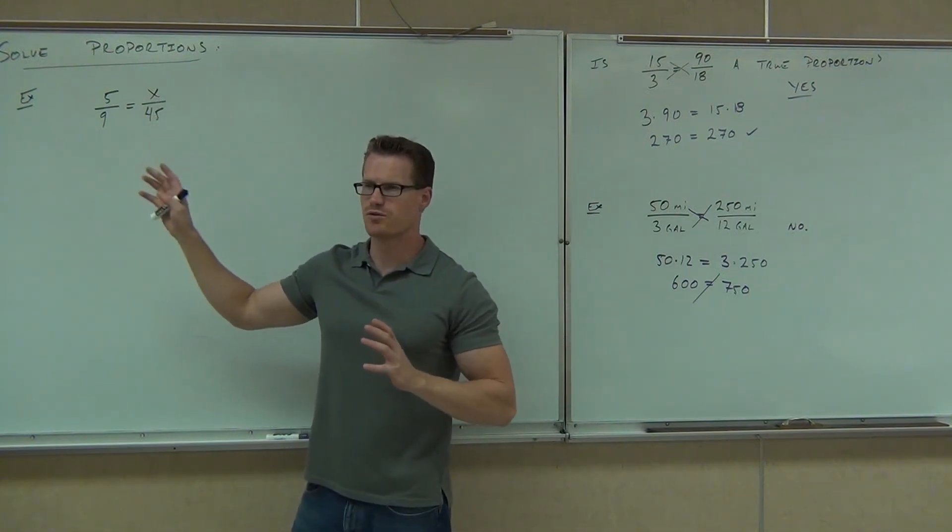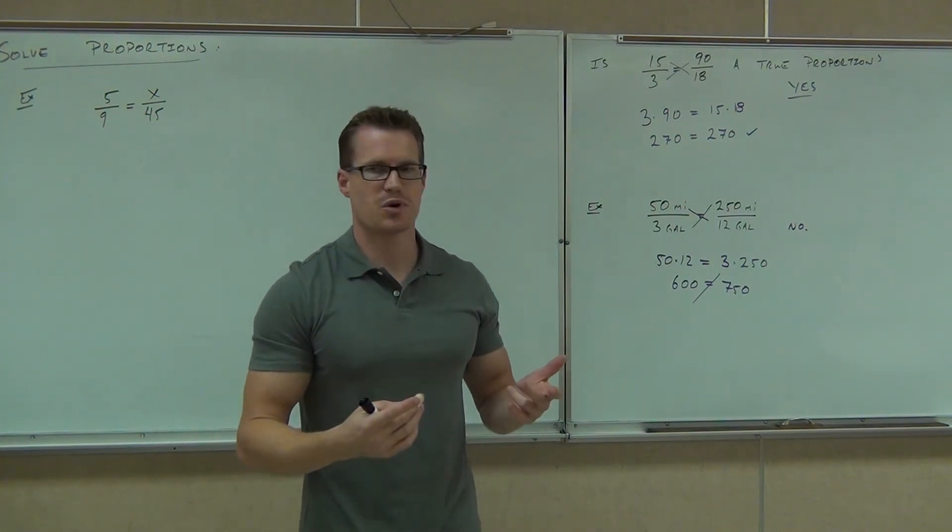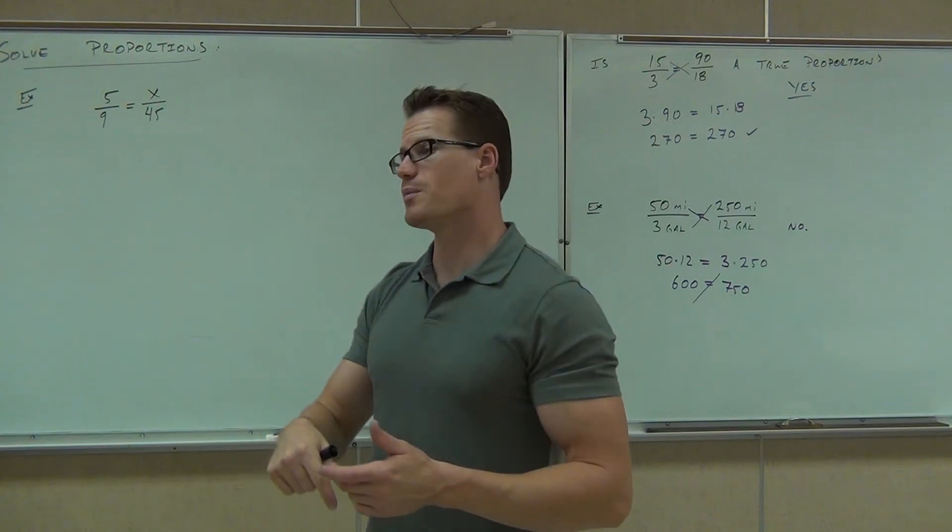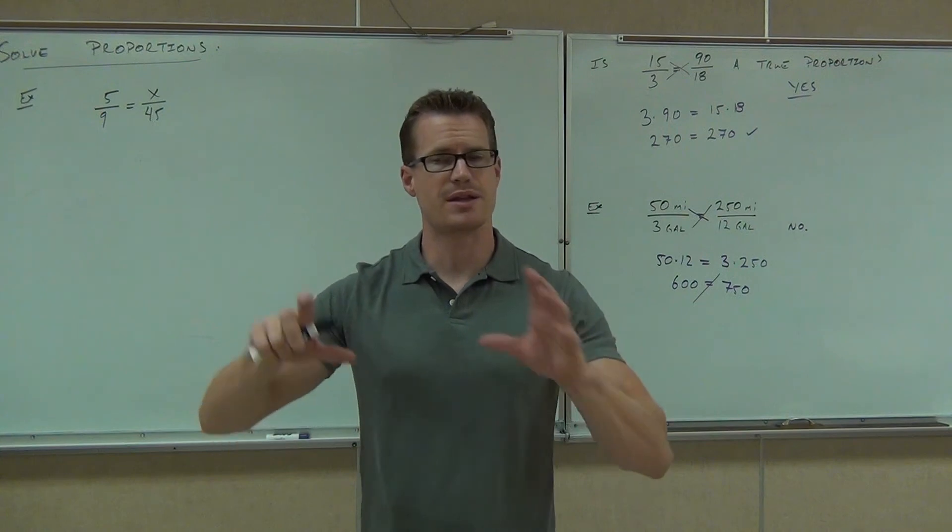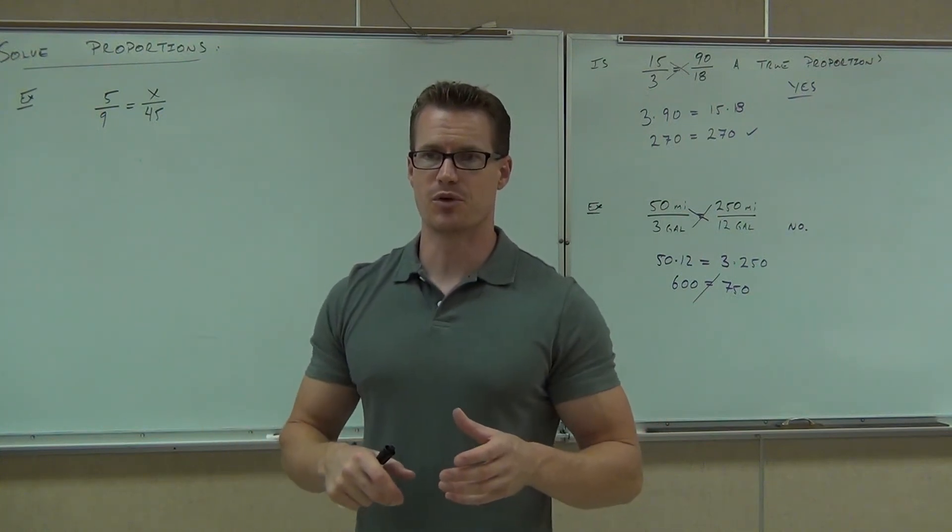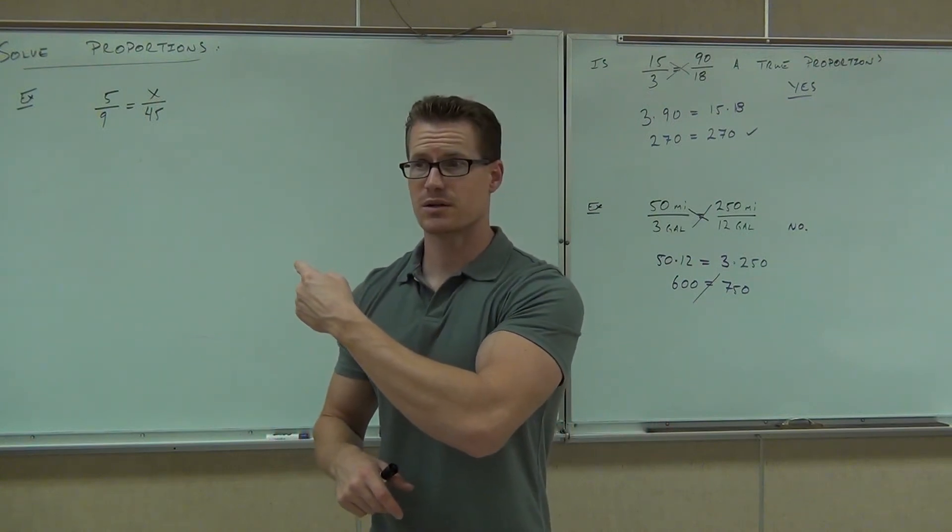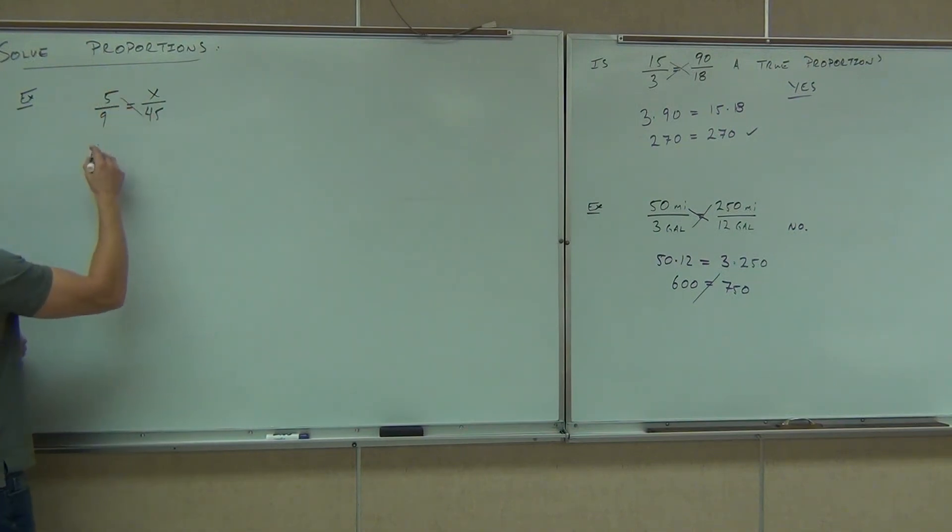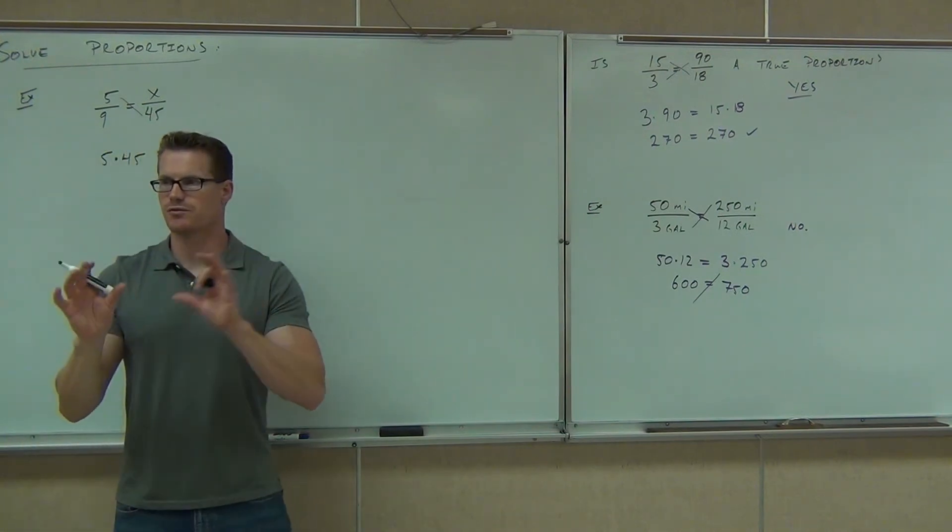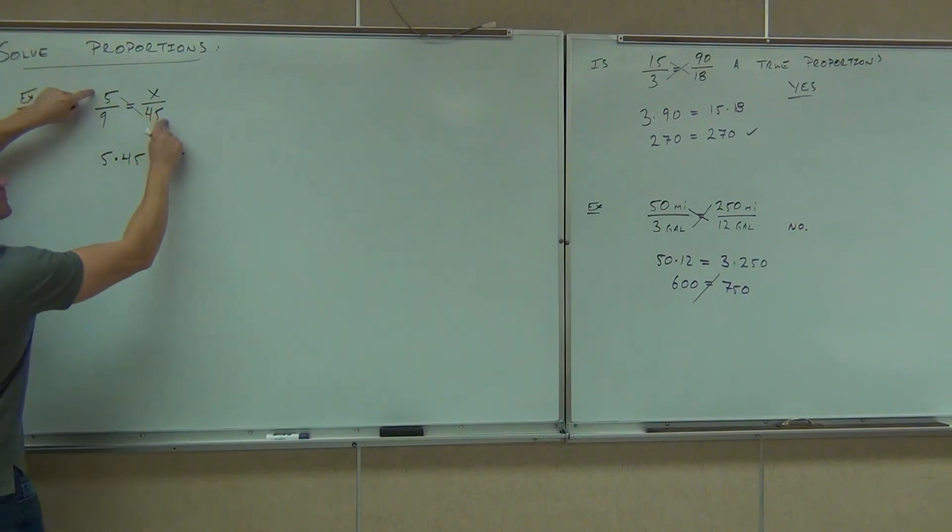we can't tell whether this is true or false because we don't even have a number up there right now, but what we can do is use this idea of cross products to solve for what that number needs to be in order to make it a true proportion. That's the idea. You're solving for what that number needs to be in order to make it a true proportion. You guys know the whole cross multiplication thing? Cross product? Can we find the cross product here? What two numbers need to be multiplied together? Five times 45. Okay, so we do five times 45. It does not matter what side that goes on for your equation. It doesn't matter at all. As long as you're multiplying these two and these two. So,